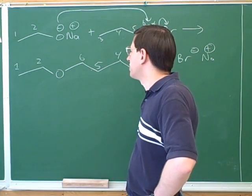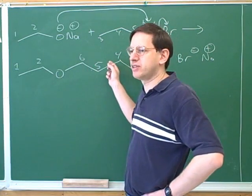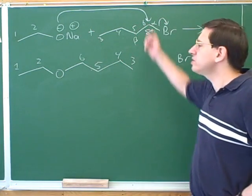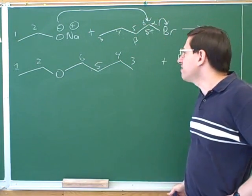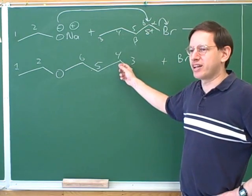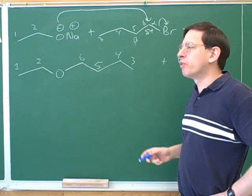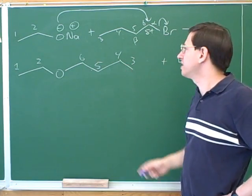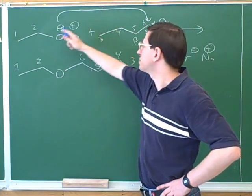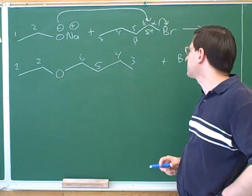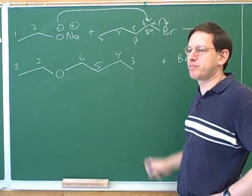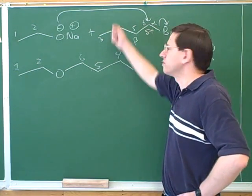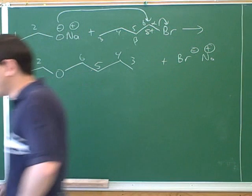We went through a very important technique of using numbers to make sure we're getting the exact right product. A lot of people don't realize that once you've drawn the arrows, even a five-year-old should be able to draw the right product after that point. The hard part is coming up with the arrows, but once you put in the arrows, they tell you exactly what the product looks like — what bonds to form between the oxygen and the number six, and exactly what bonds to break between the six and the bromine. If we just take our time and use numbers, we should always be able to draw the right product after we've got the arrows in. Getting the arrows is the hard part.